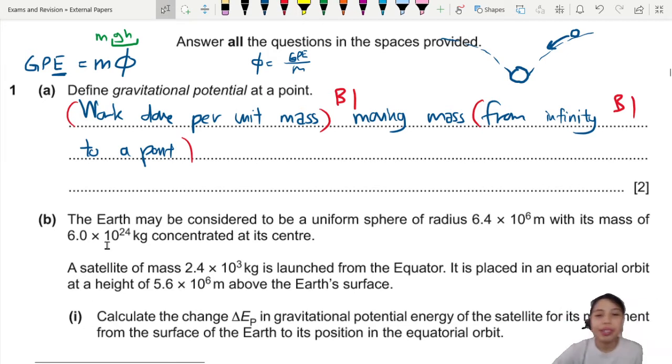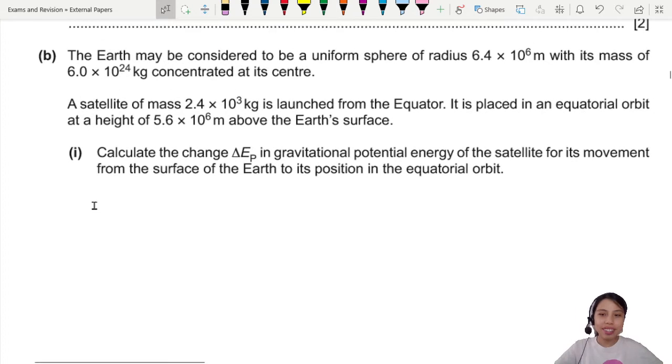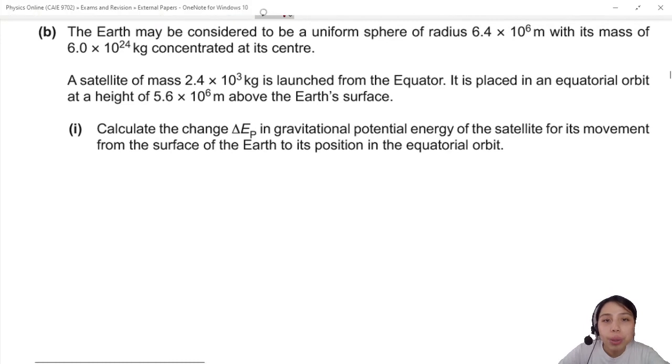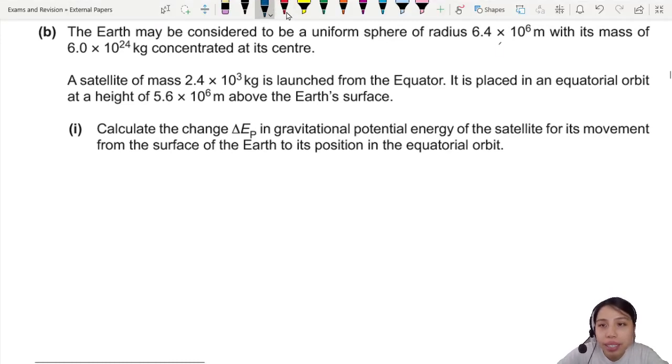If you say from infinity to point, moving it, the energy, there will be another B1 mark. So that's gravitational potential. Now we come to some space science. The Earth is a uniform sphere with a mass in the center. Oh, let me just do some labeling here. This is R, Earth lah, R-E lah.